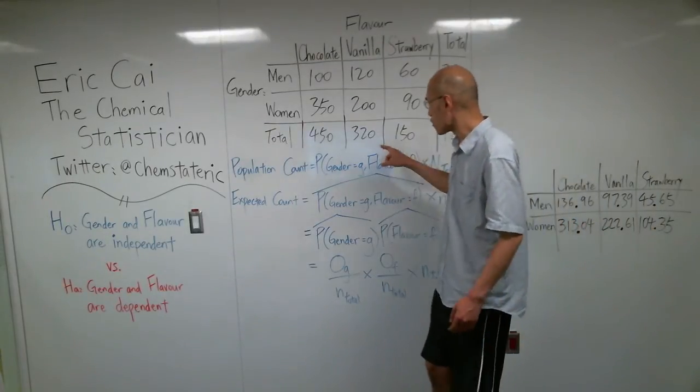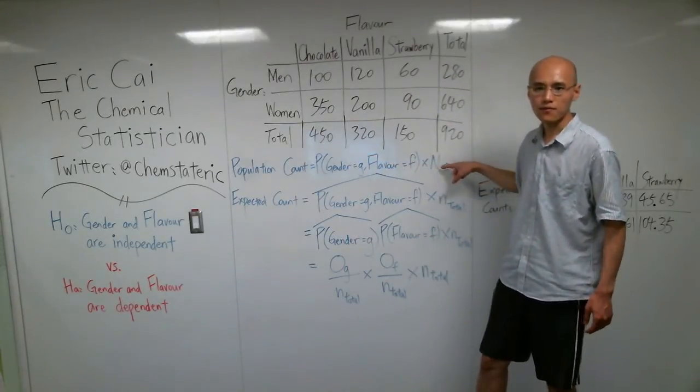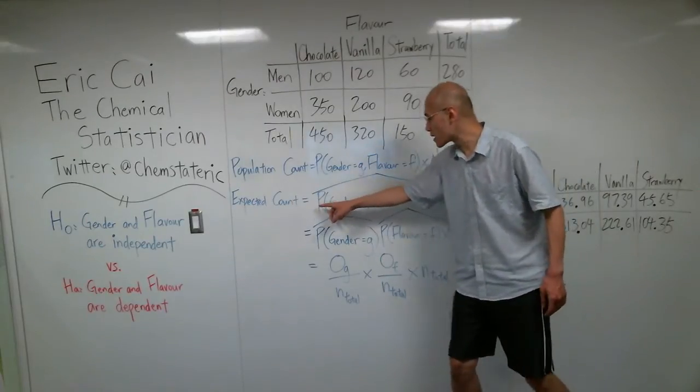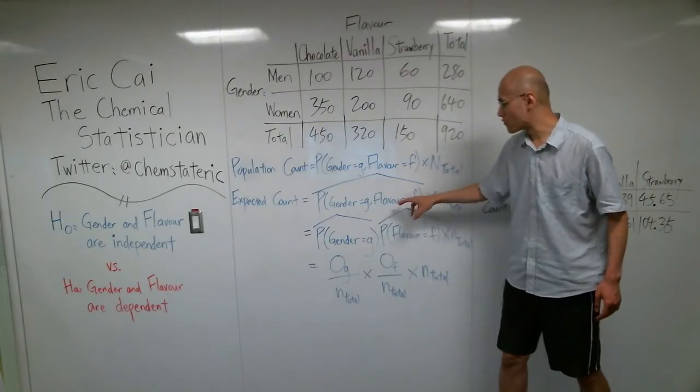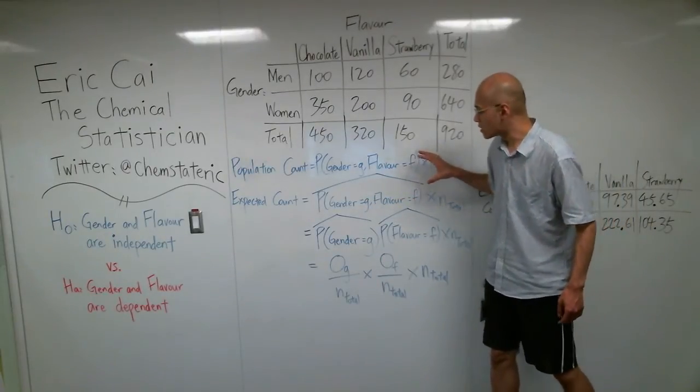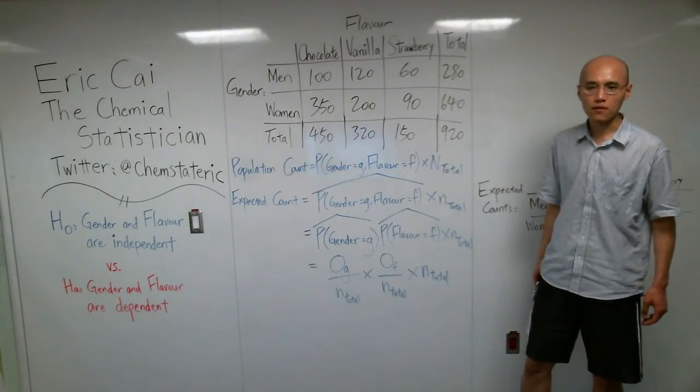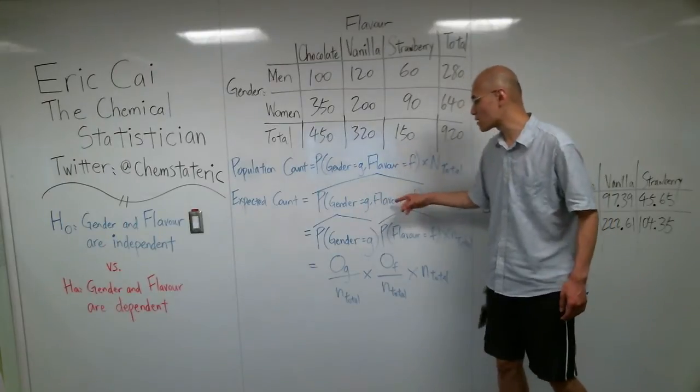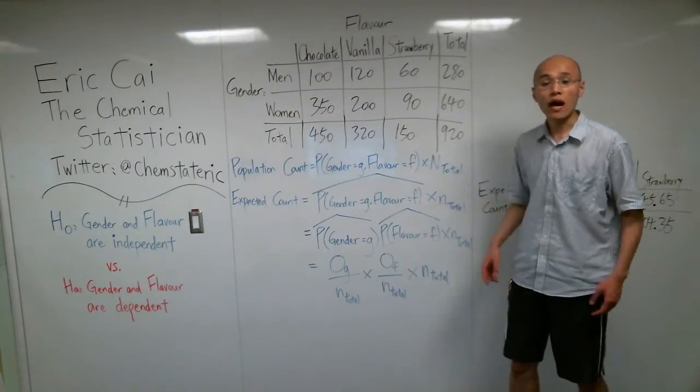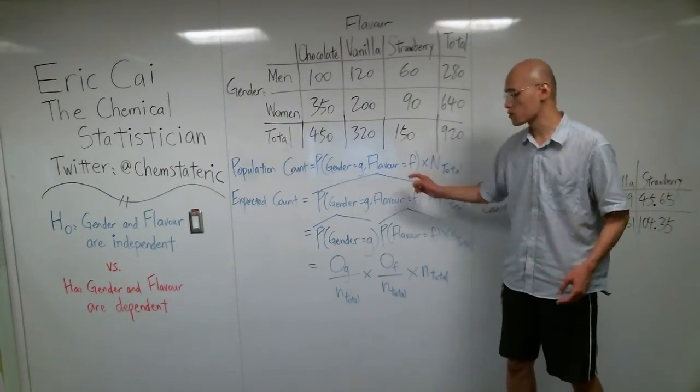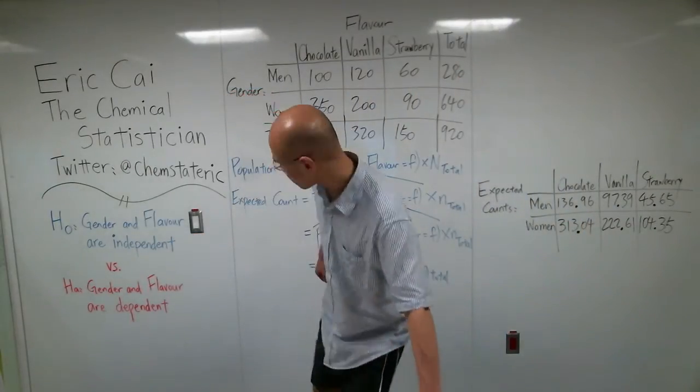Now, I don't know what this probability is. This is the true probability. I don't know what this is, but I can estimate it. And that's why I'm using this hat above this probability here. I am denoting that this is an estimator of the true probability. I'm going to estimate this joint probability between gender and flavor. Now, how are we going to estimate this joint probability? Well, by the assumption of independence, and maybe I should write this down here.